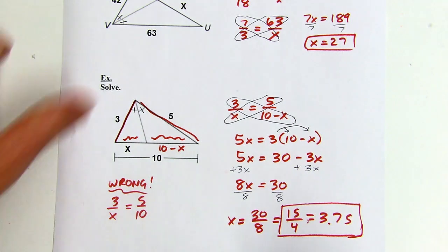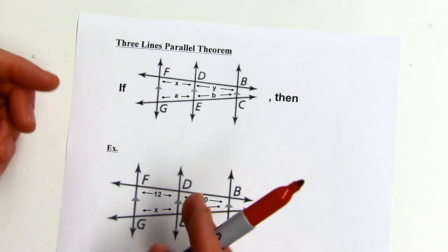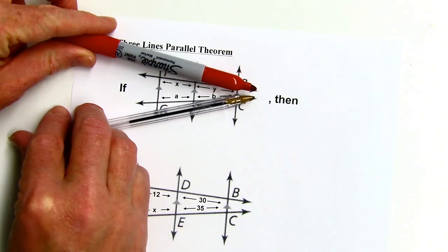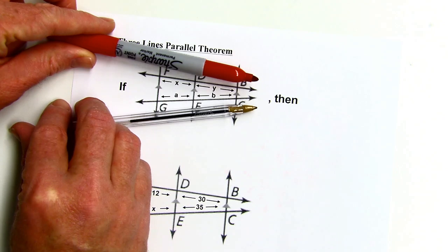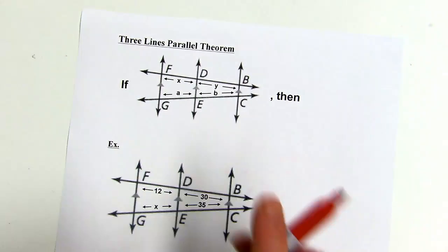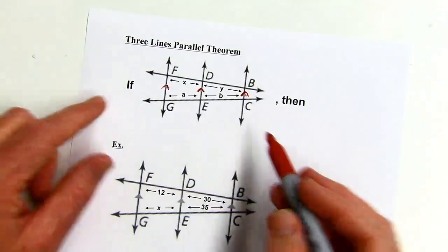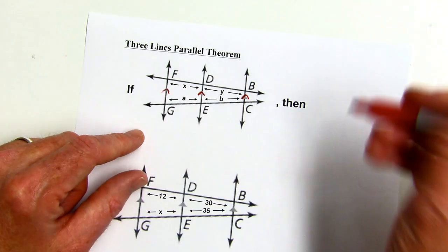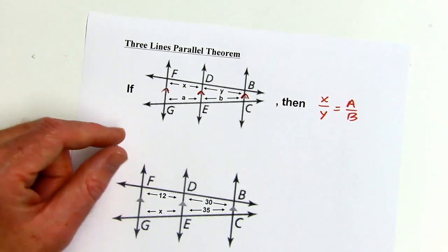We have one more theorem, very similar in concept. This is the three lines parallel theorem. Before we had a triangle with two parallel lines; now the figure is opened up so it's not a triangle, and all three transversals are parallel. When that happens, x is to y as a is to b — those segments are in proportion.